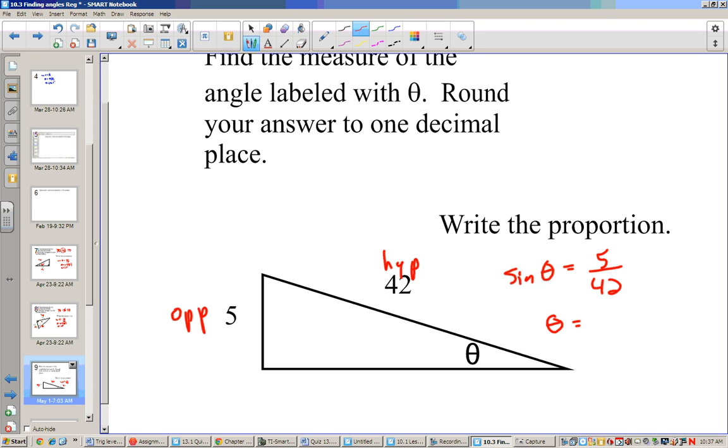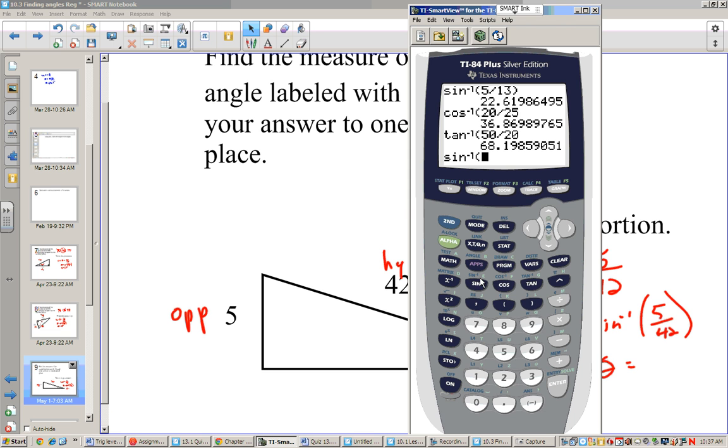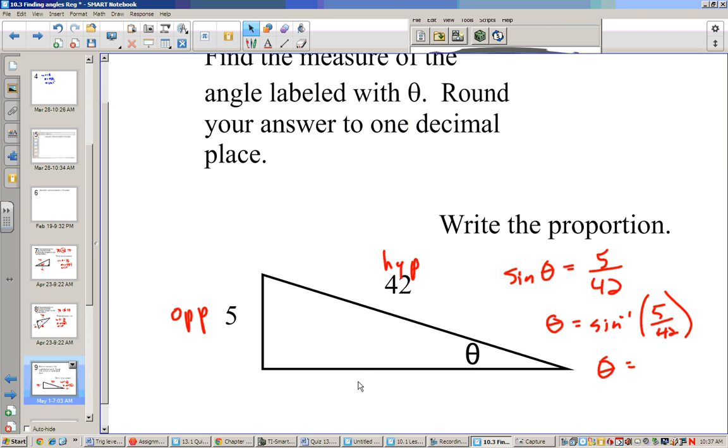Now I take the inverse sine of both sides. And theta will be inverse sine of 5 over 42, which is 6.8. So about 7 degrees.